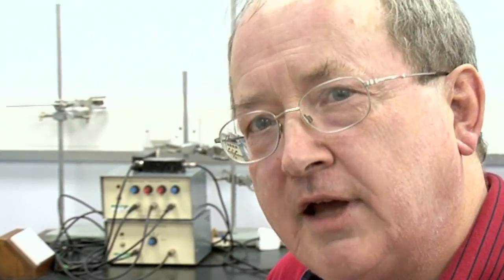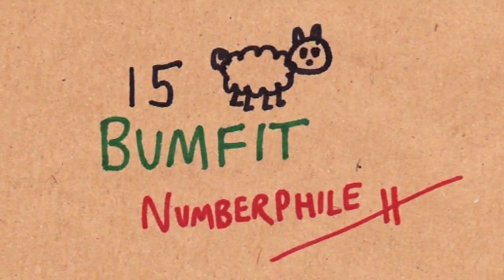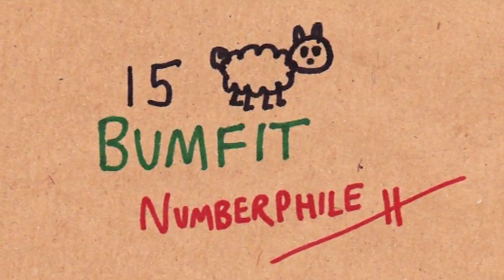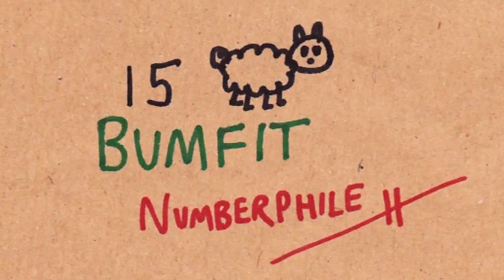This is the form of English used by shepherds to count their flocks. And I've spent quite a lot of time, Brady, learning how to say yan, tan, tetherer, petherer, pimp — for one, two, three, four, five.